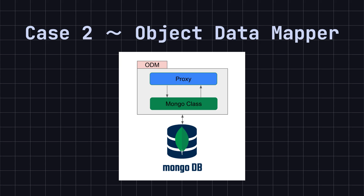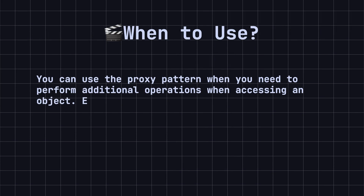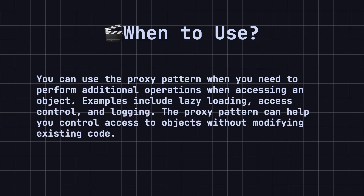I wrote a proxy on top of the Mongo classes and utilized the magic method __call__. All method calls were proxied to the original Mongo class, and results were returned as is. But in the case of Find or FindOne, data was mapped to the desired class objects instead of returning a cursor. So, when should we use the proxy design pattern? You can use the proxy pattern when you need to perform additional operations when accessing an object. Examples include lazy loading, access control, and logging. The proxy pattern can help you control access to objects without modifying existing code.